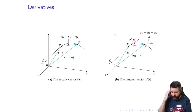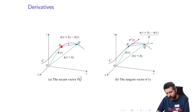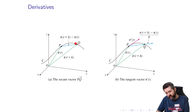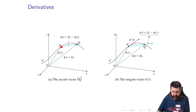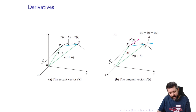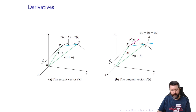Here's a picture that explains why r'(t) is the tangent vector. You have point P given by position vector r(t), and point Q given by r(t+h). As h goes to zero, Q slides along the curve towards P. The vector r(t+h) minus r(t) points from P to Q; when you scale it by 1/h and take the limit as h goes to zero, you slide Q along the curve until it reaches P, giving you the tangent vector there.